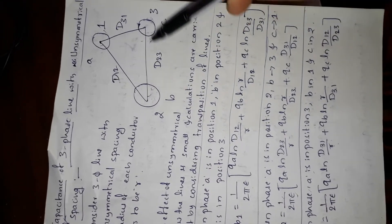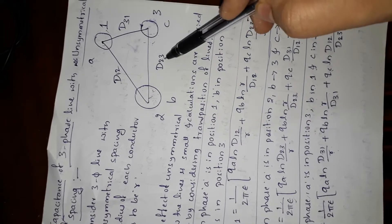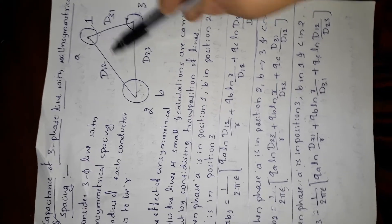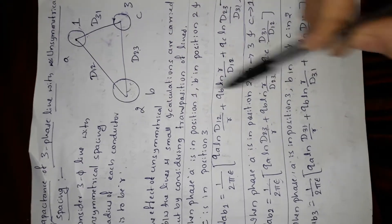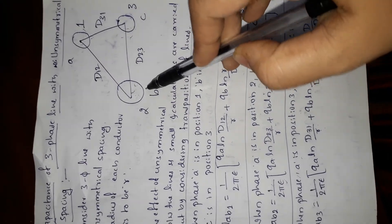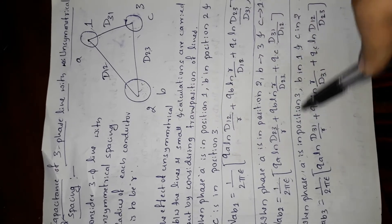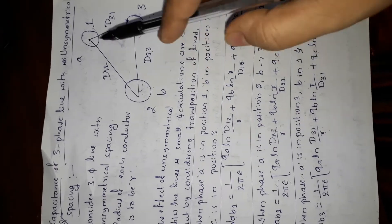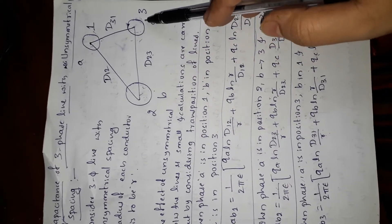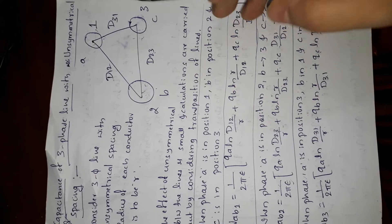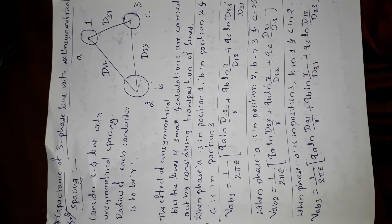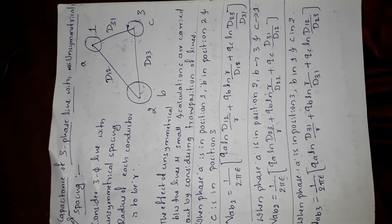For each equation, you can draw the triangle and place conductor a at the first, second, and third positions respectively. You will get a clear picture of the configuration for each case.